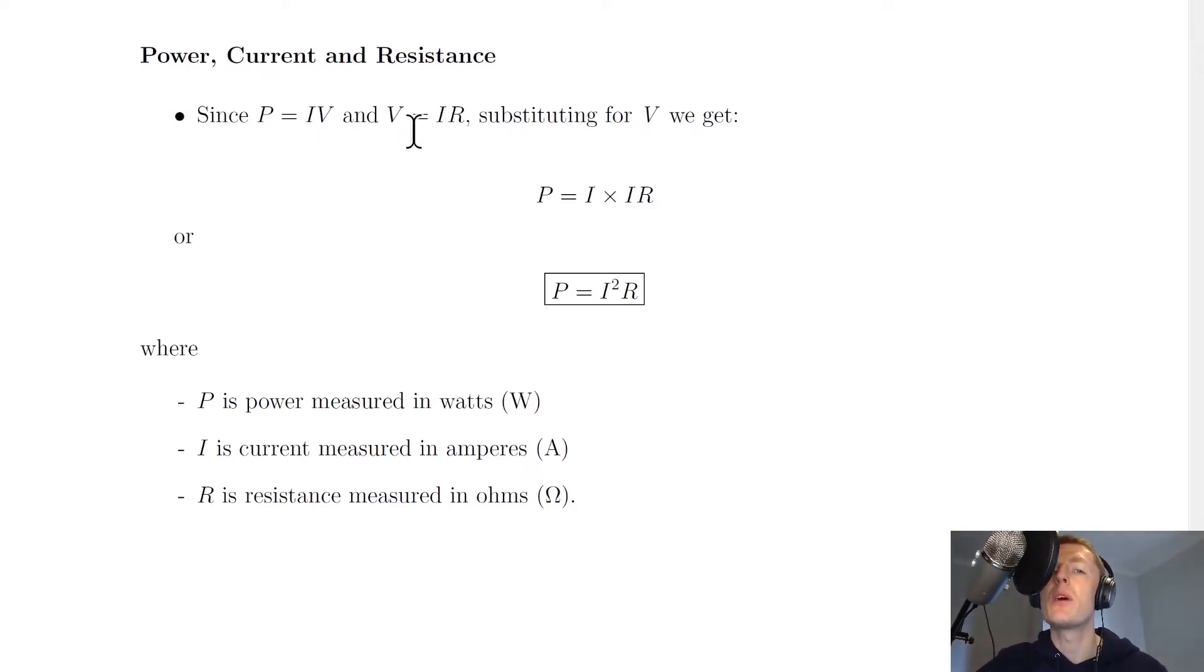and an old familiar one from Ohm's Law, V equals IR. If we substitute for V in this equation by putting the IR from here into the V in P equals IV, then we end up with P equals I times IR. I times I gives us I squared. So we end up with P equals I squared times R, or P equals I²R.